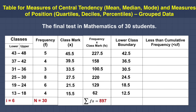Finally, let us get the less than cumulative frequency. Copy the frequency at the bottom row first — that is 4. Then get the cumulative sum going upward: 4 plus 6 equals 10; 10 plus 8 equals 18; 18 plus 3 equals 21; 21 plus 4 equals 25; and 25 plus 5 equals 30. The last number must equal n, which is 30.